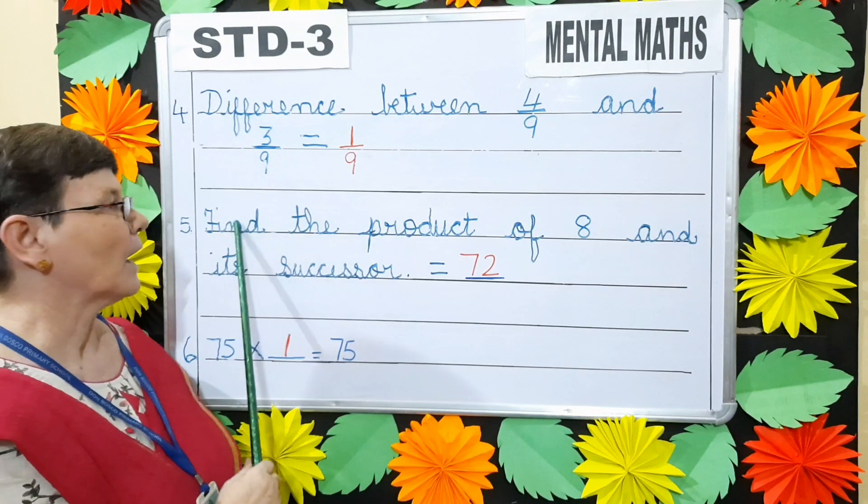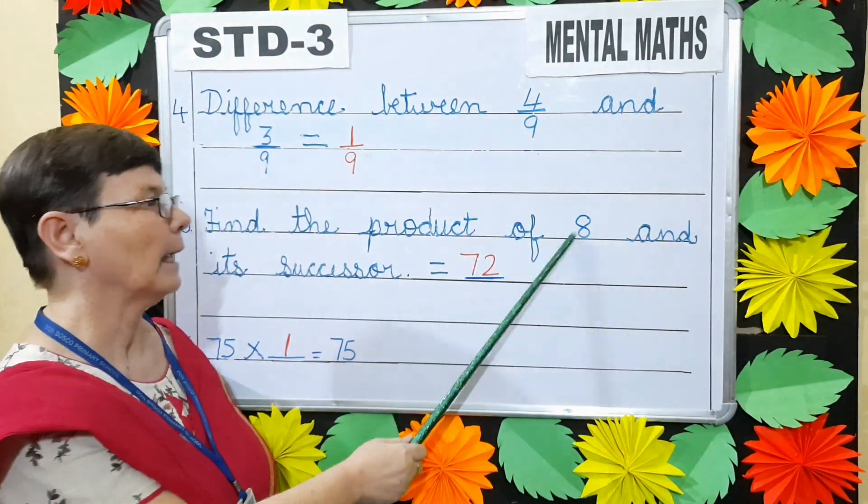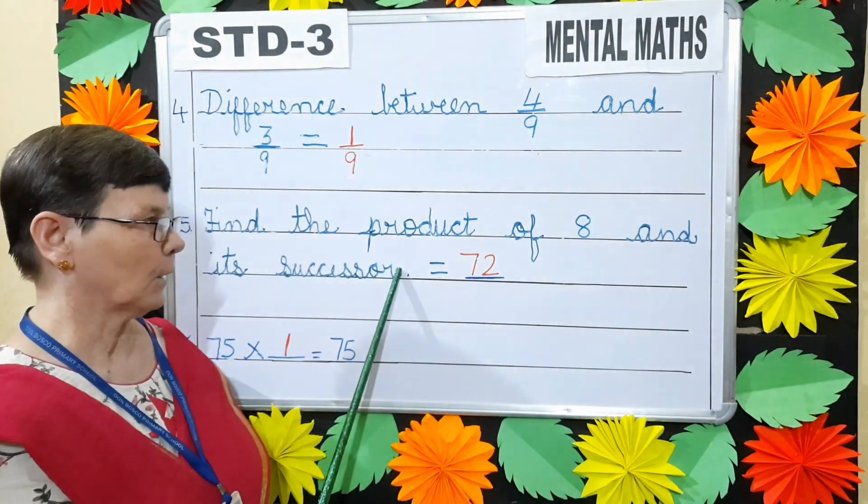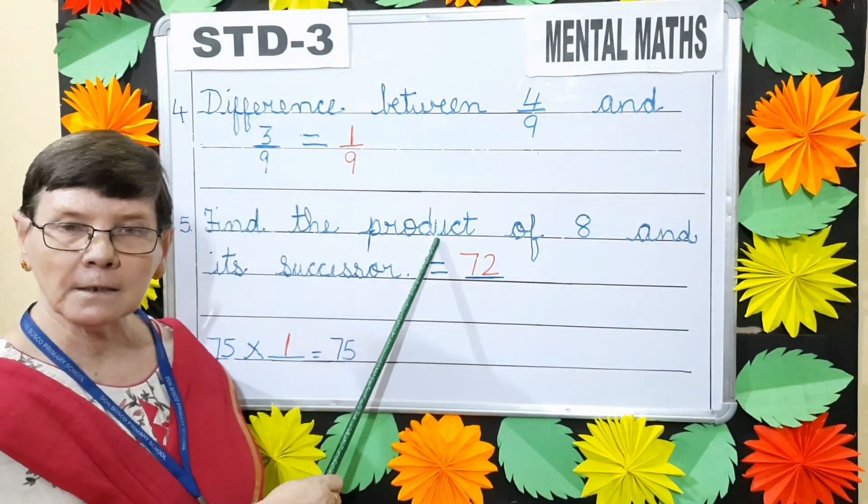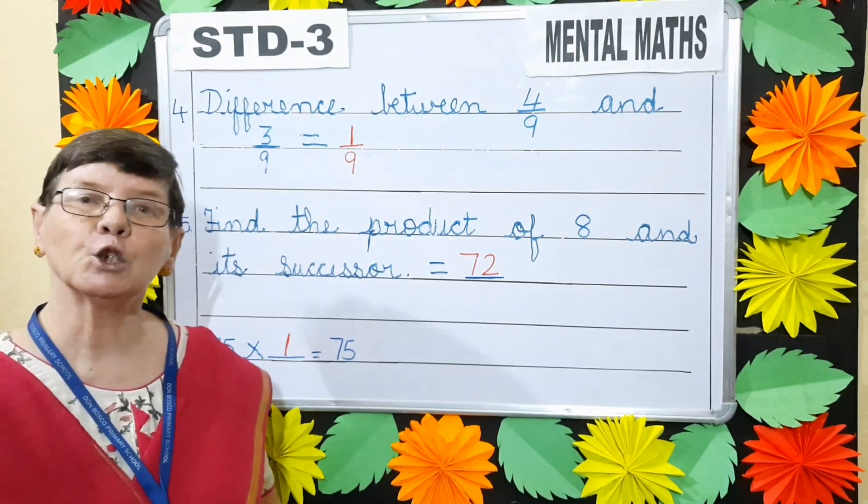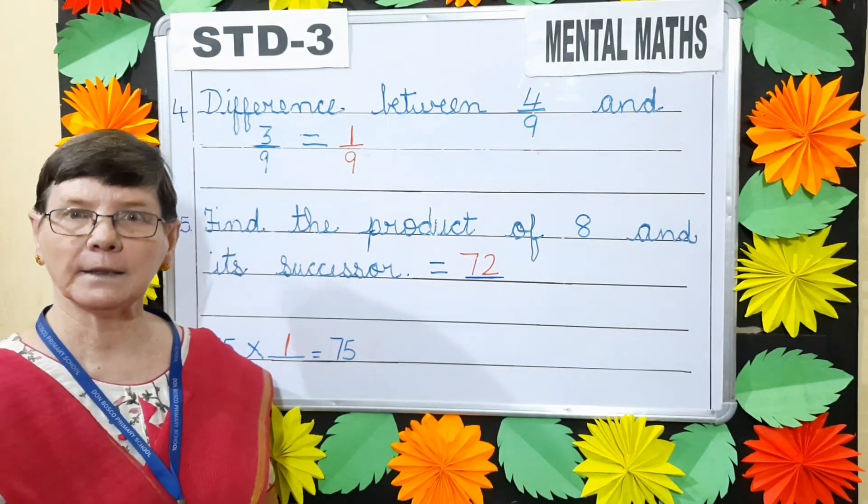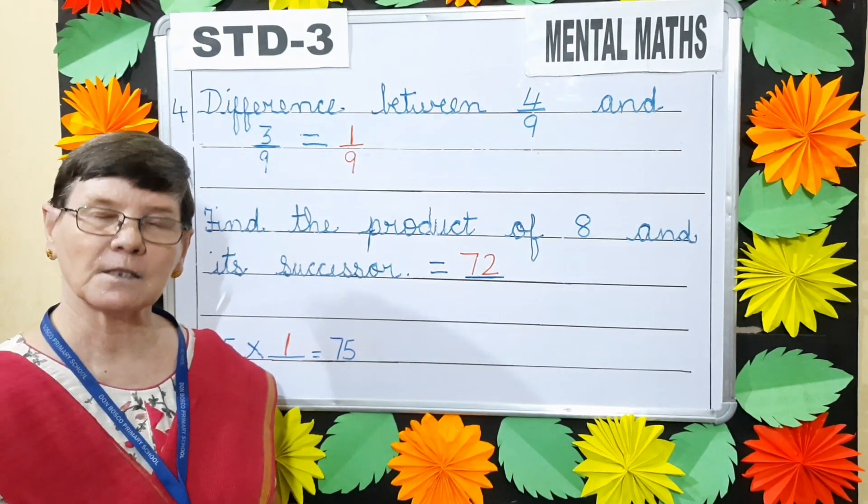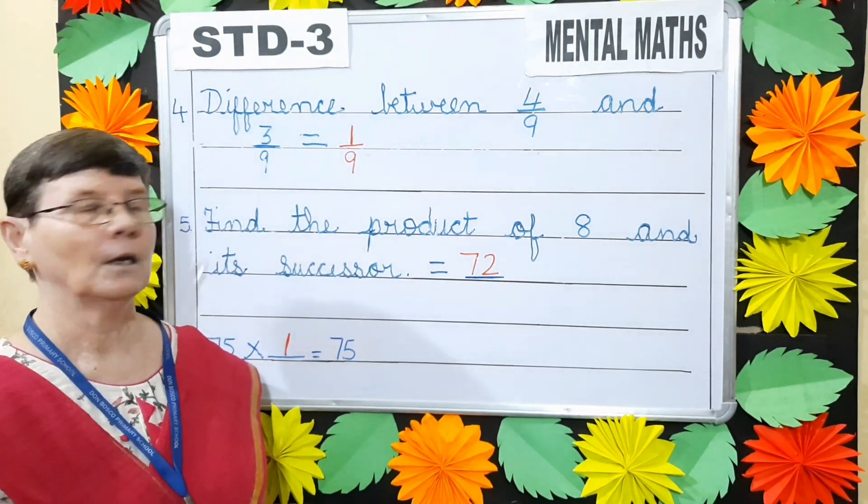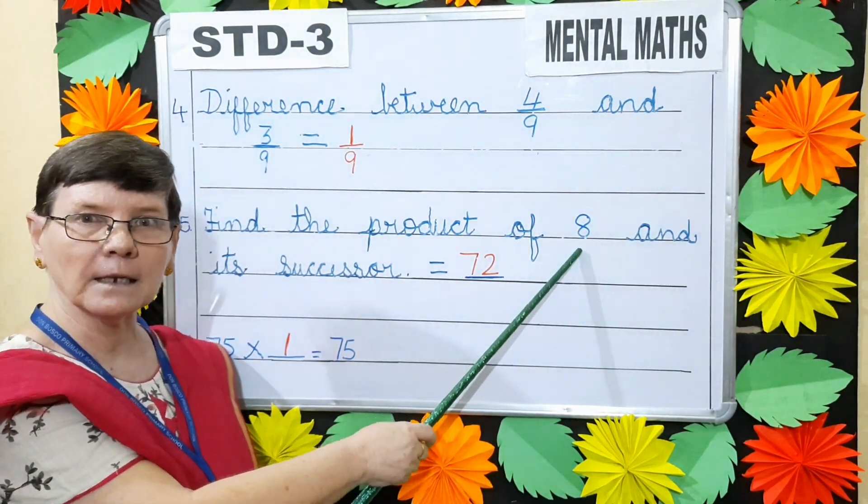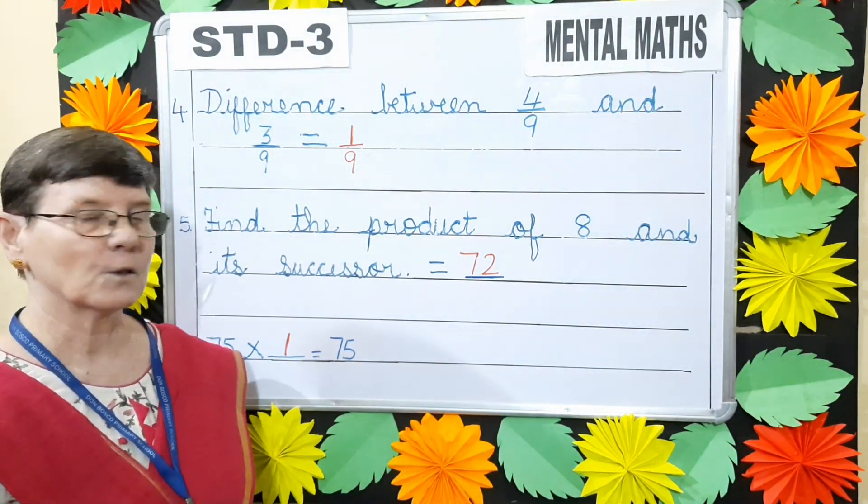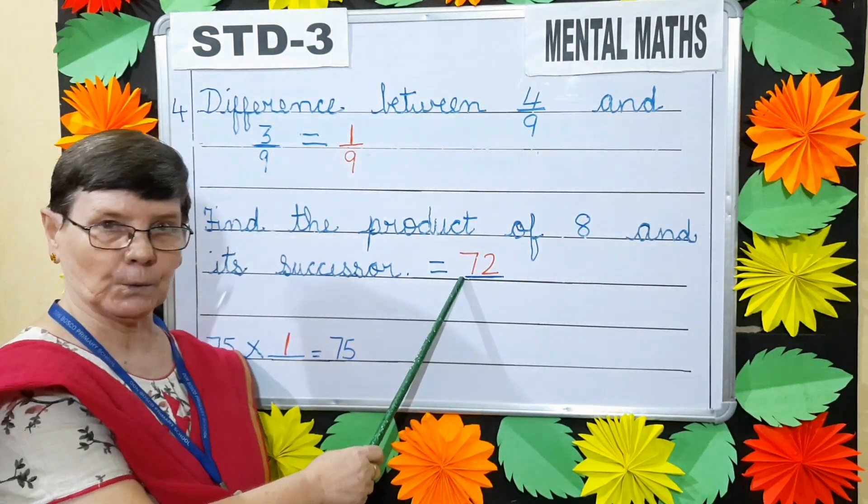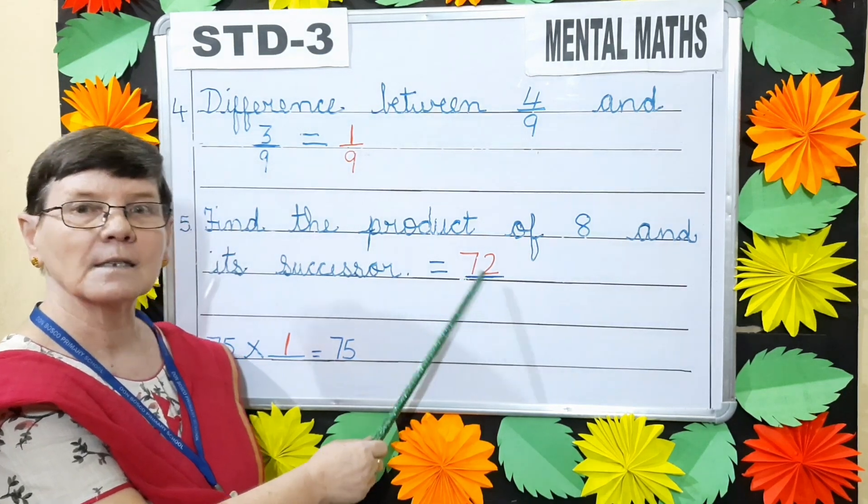Next, find the product of 8 and its successor equals to dash. Product means multiplying 2 numbers and you get the answer. The answer in multiplication is known as product. So what is the successor of 8? 9. So say your 8 times table, 8 9's are 72. So your answer is 72.